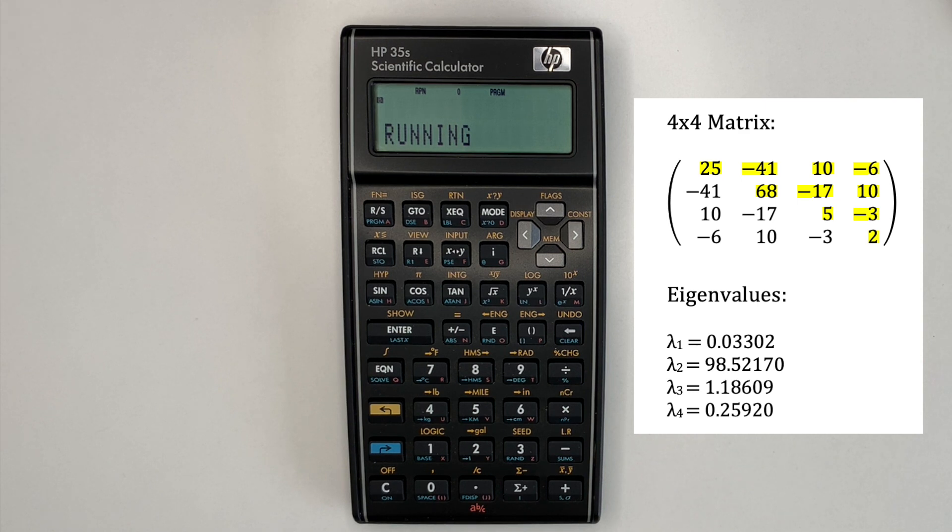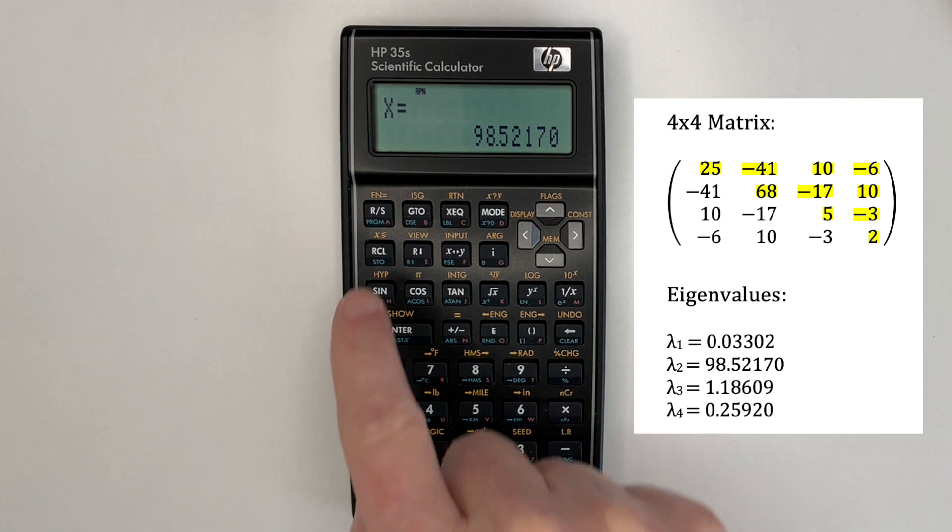So the 4x4 matrix takes approximately 55 seconds. Okay, the first eigenvalue has been returned, 0.03302, which is correct. Run stop for the next one, 98.52170, which is correct.